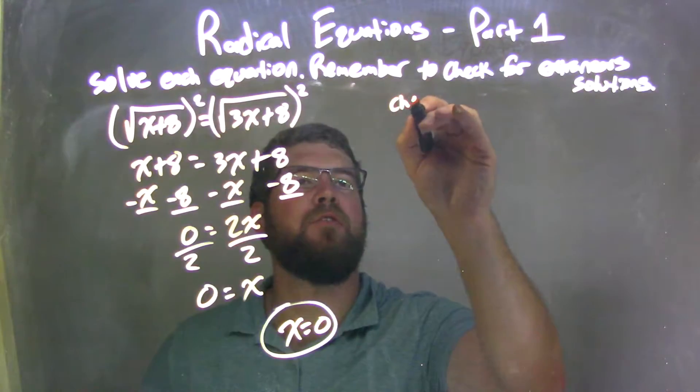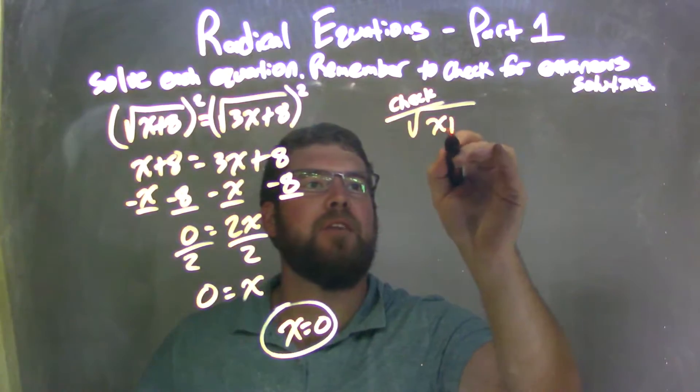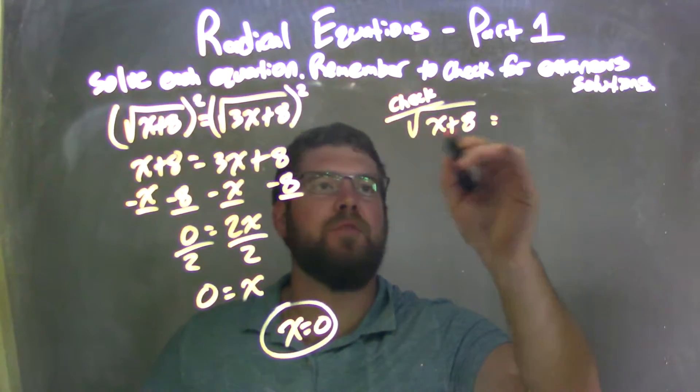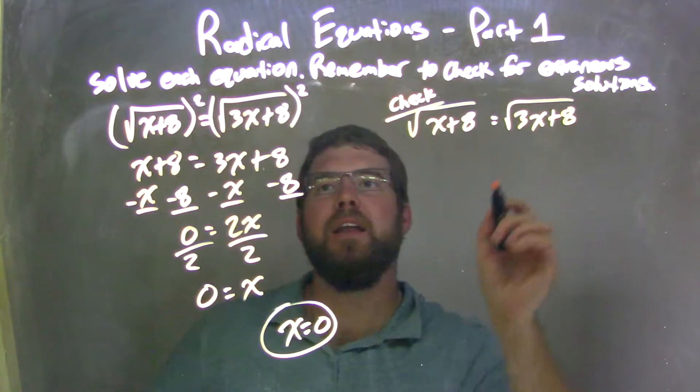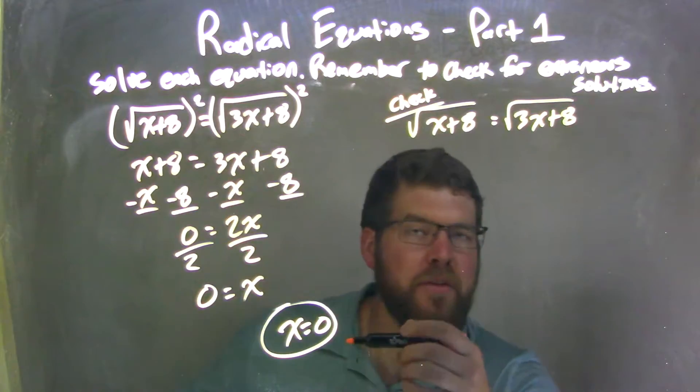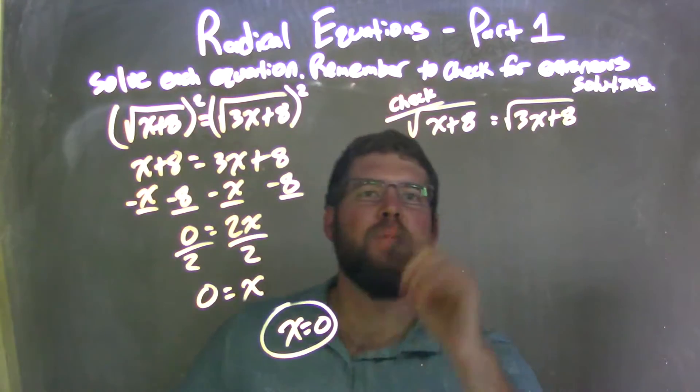So let's go check our work, so let's check it. We have the square root of x plus 8 equals the square root of 3x plus 8. Now be careful, once you're comfortable with zeros, I love plugging zeros in, it really eliminates things quickly.